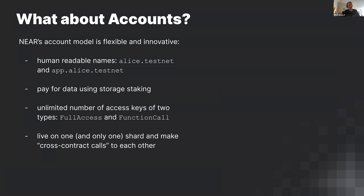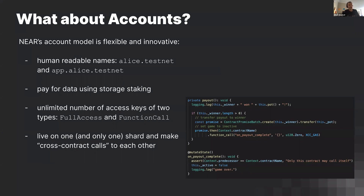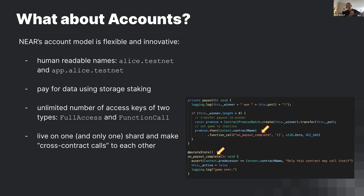Contracts live on one and only one shard and call each other using cross-contract calls. Here's an example: a method called 'payout' uses a ContractPromiseBatch to transfer money to a winner, and then 'promise.then' calls itself back to confirm the payout is complete. This is effectively how NEAR scales across shards — every account is assumed to live on its own shard, and even a self-call goes through the same cross-shard machinery.